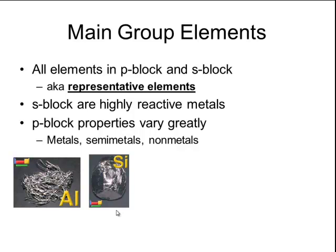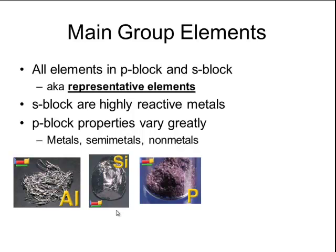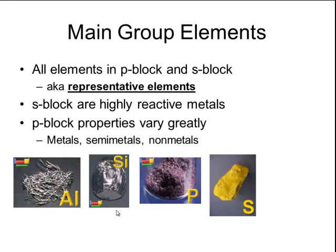The next element across the p block is phosphorus, which is a non-metal — notice that the color and crystalline structure of phosphorus are different, so that it is not malleable or ductile like aluminum and silicon. The next element is sulfur, which is also a non-metal and is even more brittle than phosphorus.